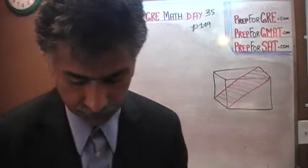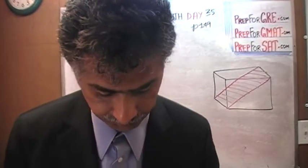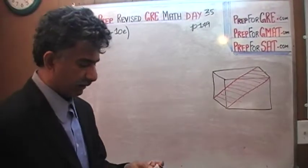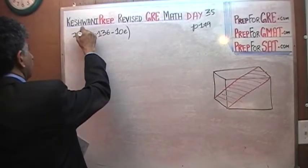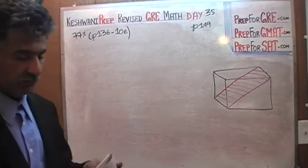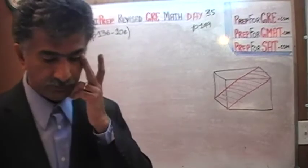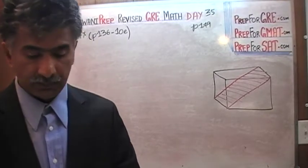So when this problem appeared in the original exam, in case you are curious how many people got it right, 77% of people, 77% of people had no problem with it at all. Three quarters of people got the problem very easily, got it correctly that is.